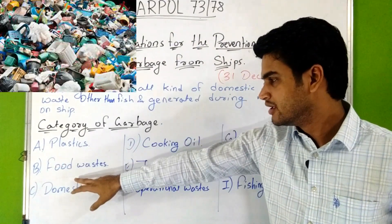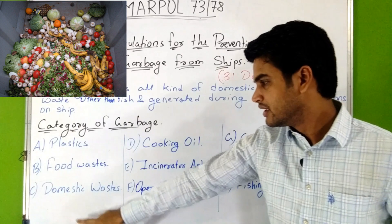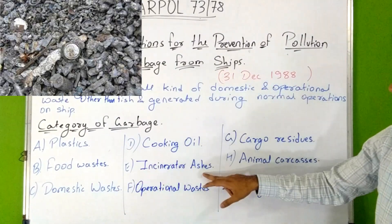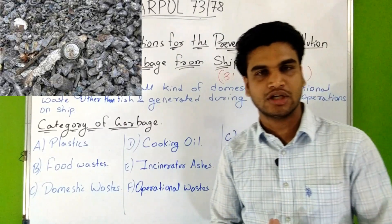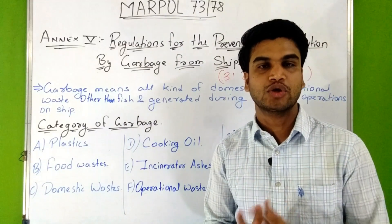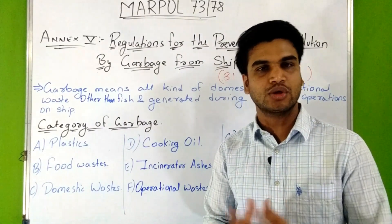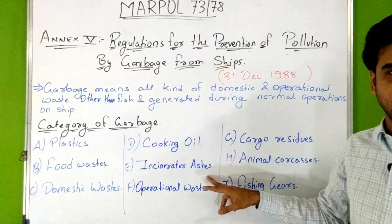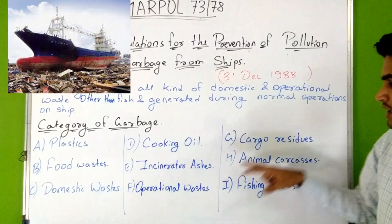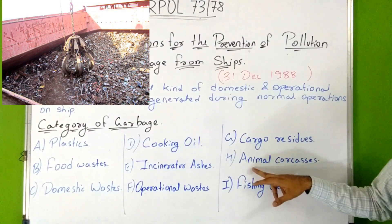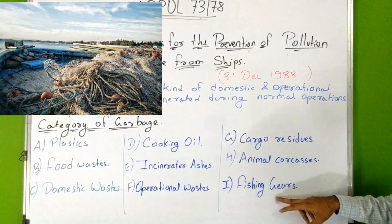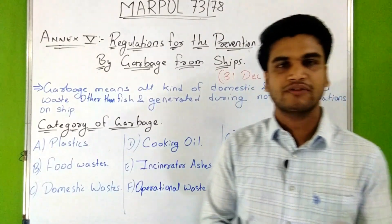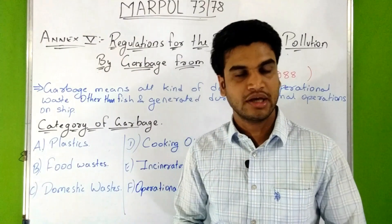The categories are: plastics, food waste, domestic waste, cooking oil, incinerator ashes — an incinerator is a furnace used for burning waste to remove contamination, so the ashes are the residue after burning — then operational waste, cargo residues, animal carcasses, and fishing gears. These are the categories of garbage defined under this Annex.